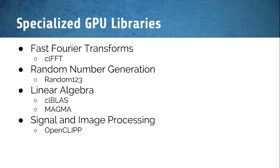A subset of the specialized GPU libraries includes the fast Fourier transform library called CLFFT, random number generation called Random123, and if you need linear algebra, you have CLBLAS and MAGMA. For signal and image processing, you have OpenCL IPP.